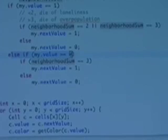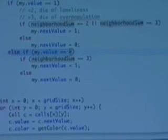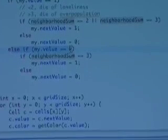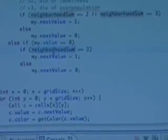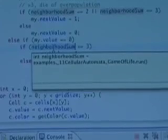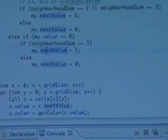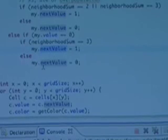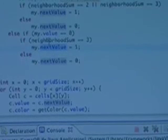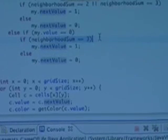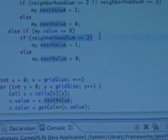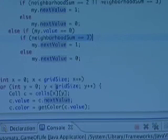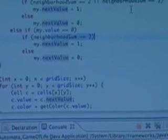Else if my value is 0, this means if the cell is originally dead, if the cell is originally black, there's nothing there. In that case, then if the neighborhood sum is exactly 3, then my next value is 1. Otherwise I stay dead. So if there are three people around me, then I'm going to be born into this cell.